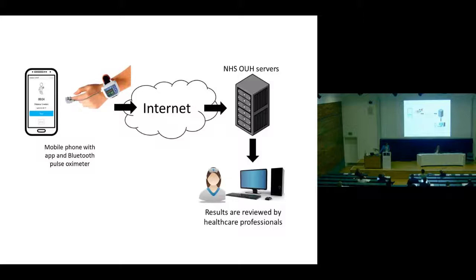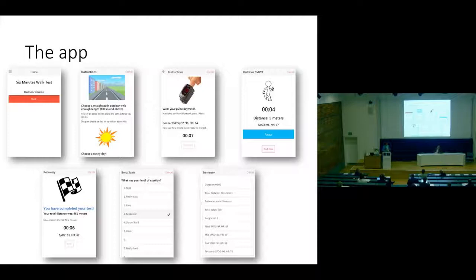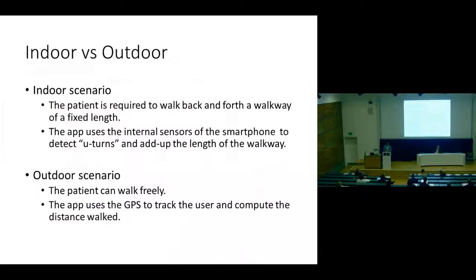This is how the app looks — it's pretty simple. There are some instructions at the beginning, then you have to wear the pulse oximeter, and then you walk for six minutes. You can also pause if you want to. At the end you get the results and there's a very short questionnaire called the Borg scale, which basically asks how hard the exercise was for you on a scale.